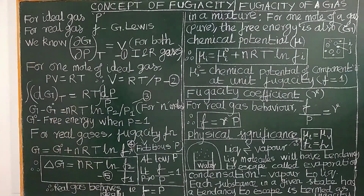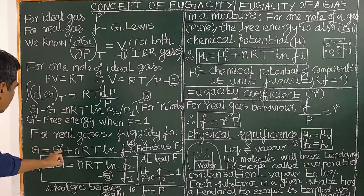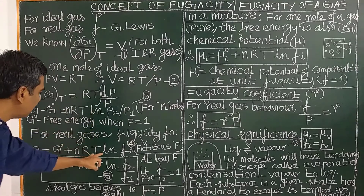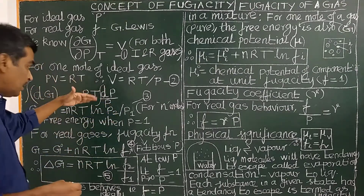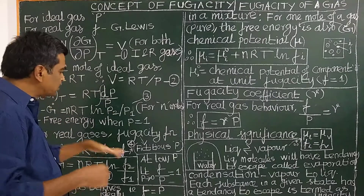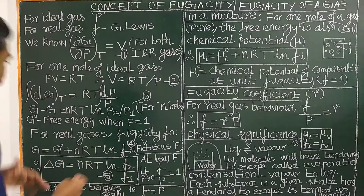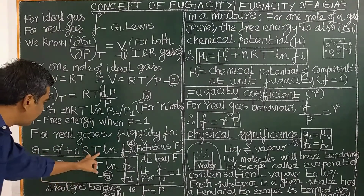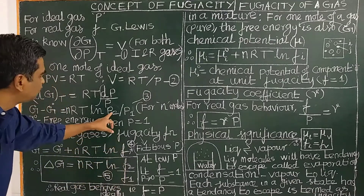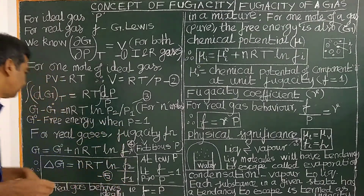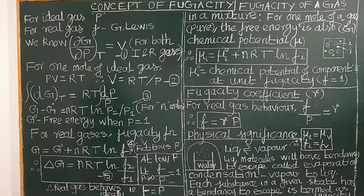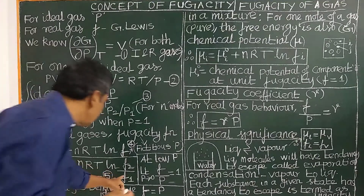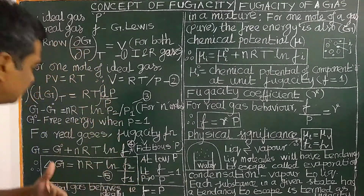G equal to G0 plus nRT ln F. Instead of pressure, it is replaced by fugacity function for real gases. Therefore, delta G, G minus G0, is equal to nRT ln(F2/F1), analogous to ln(P2/P1). This is the relationship between the change in free energy and the fugacity of the gaseous substance in state 1 and the fugacity of the gaseous substance in state 2.